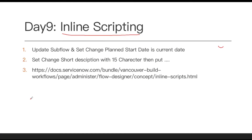In today's session, what we are going to build is that we are going to update a sub flow that we created earlier. That sub flow normally creates a change request. Previously, we created a sub flow that creates a change request via UI action — the moment you click 'create change request' it calls the sub flow. Now we are going to update that sub flow so that whenever the change is created, we are going to set the planned start date equal to the current date.